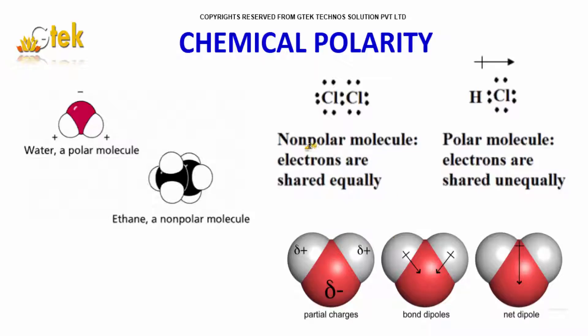So this is how the difference is. Over here you can see the partial charge — this is a partial charge — and you are able to see the bond dipoles, and here is the net dipole.